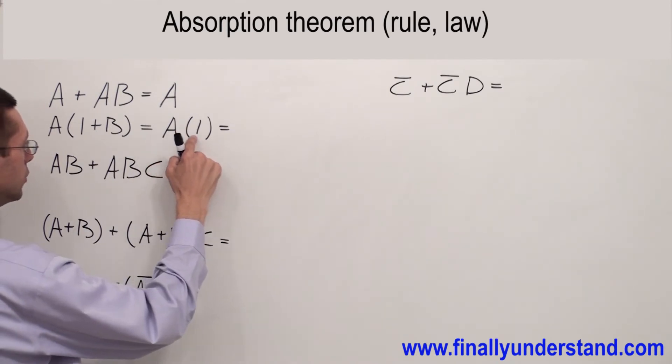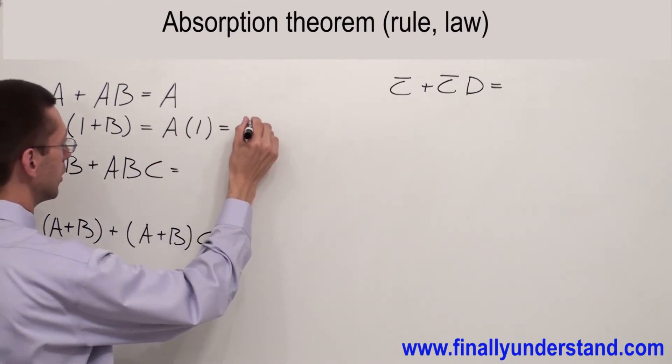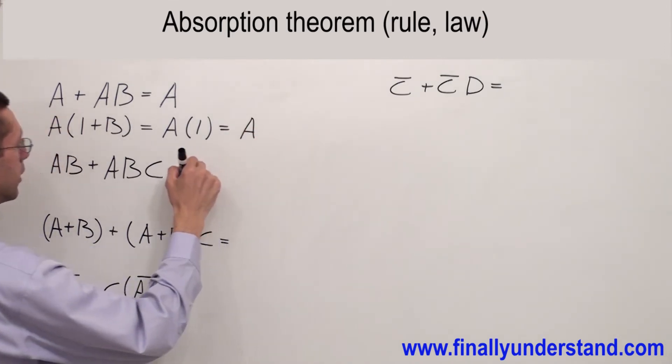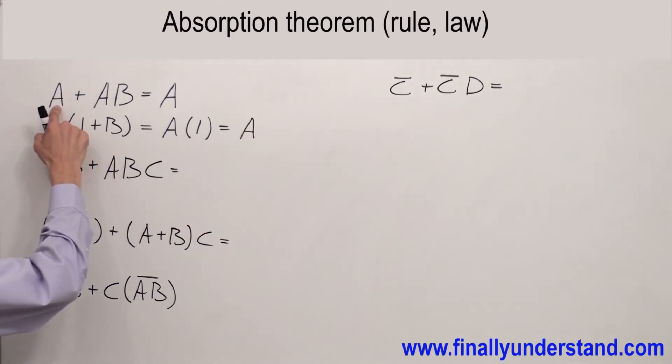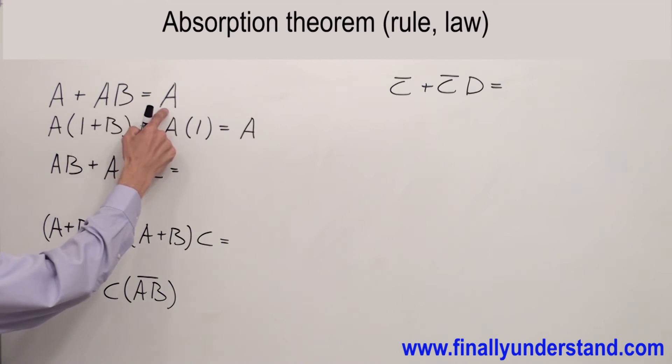So if A AND 1 is always equal A. So that's why A OR AB is equal A.